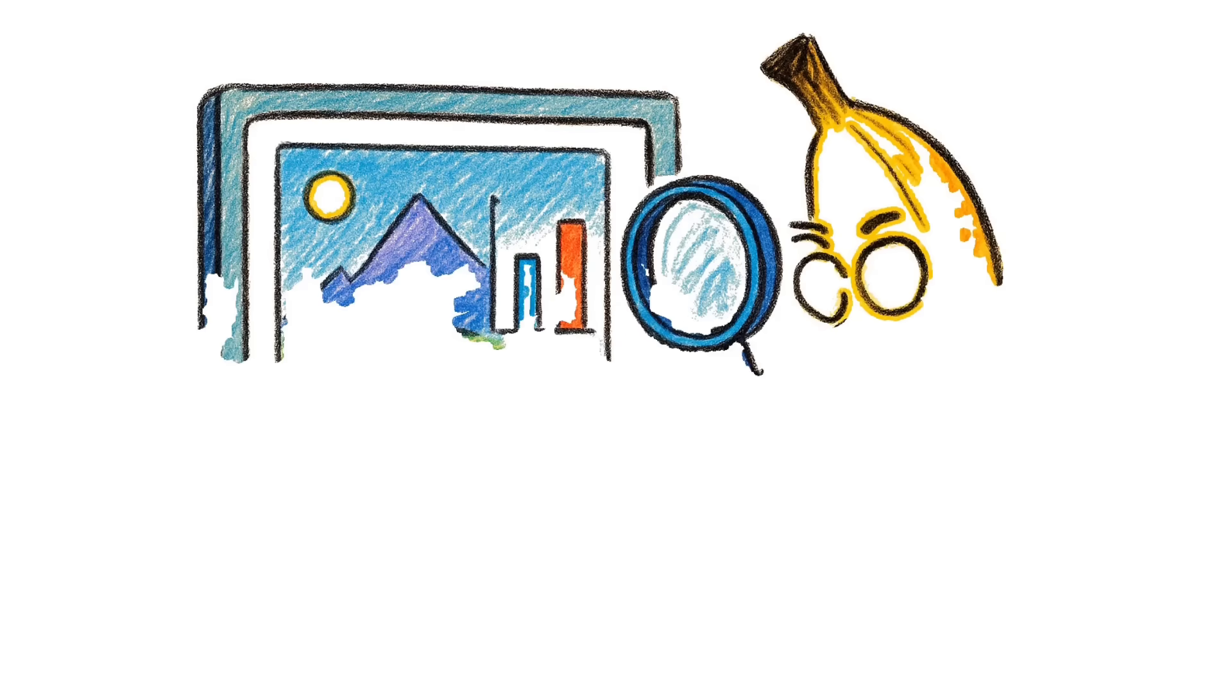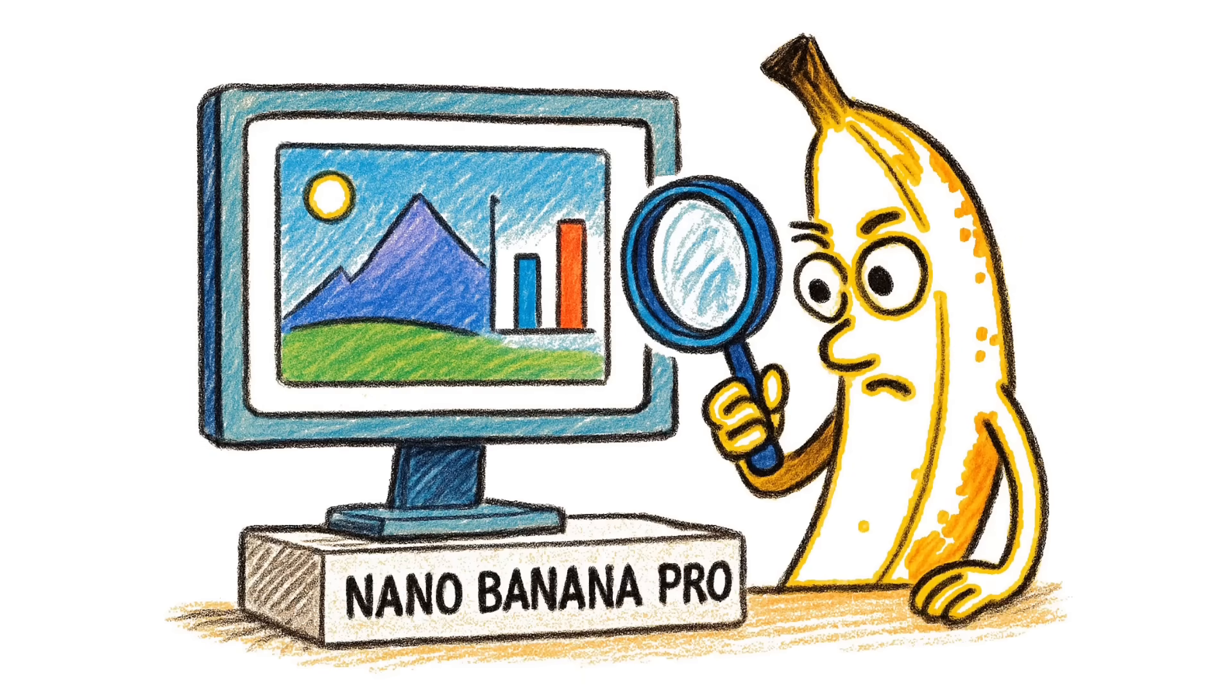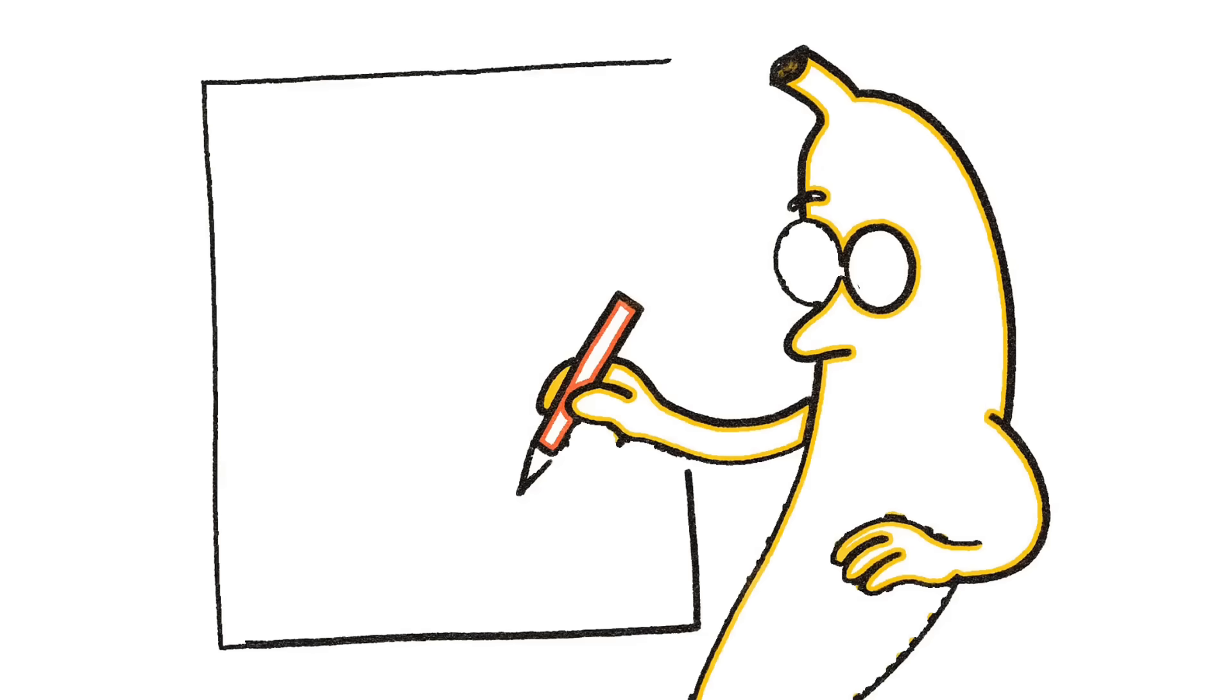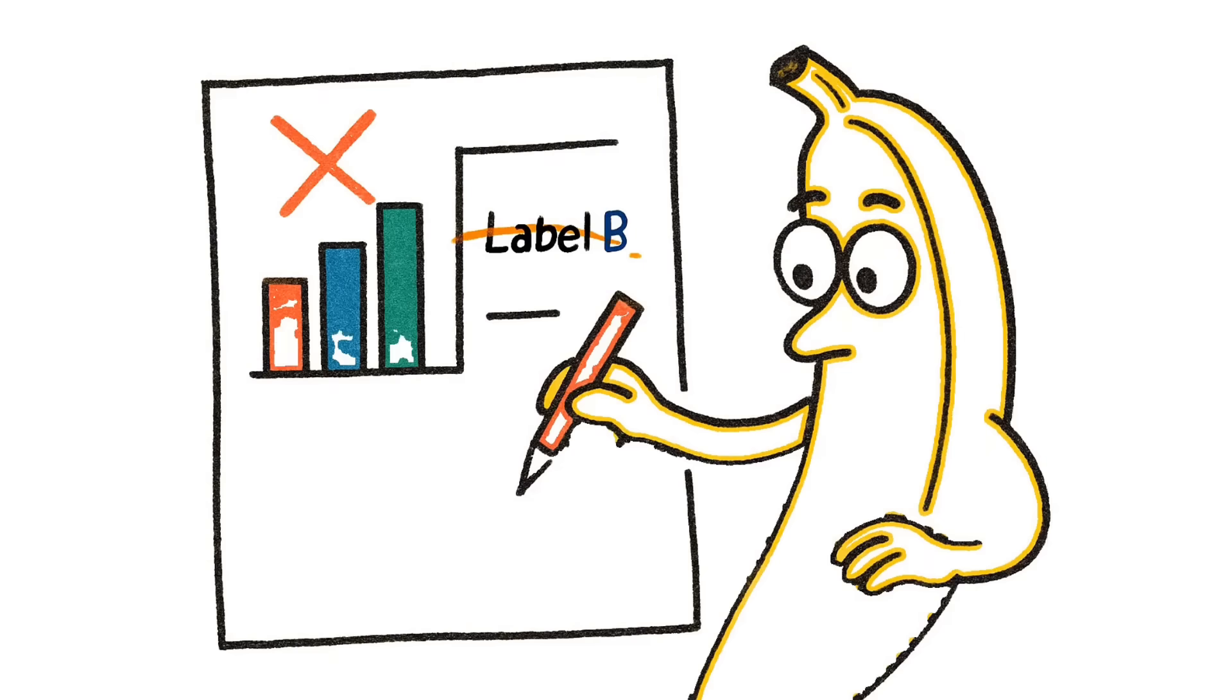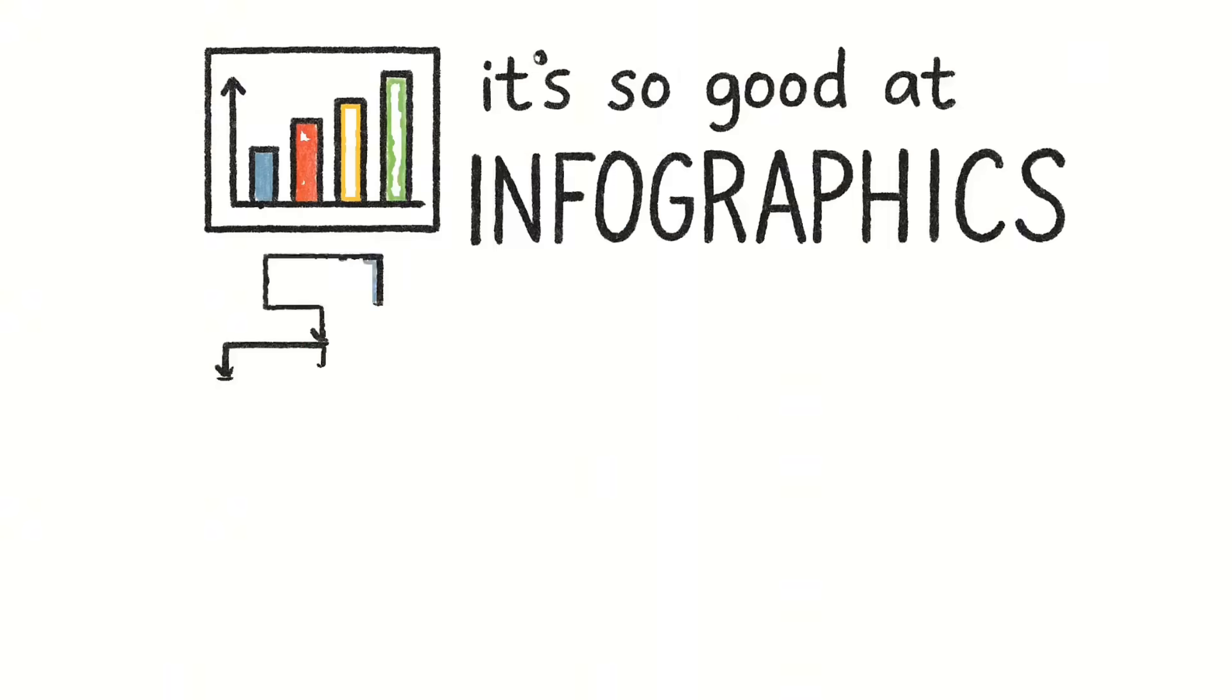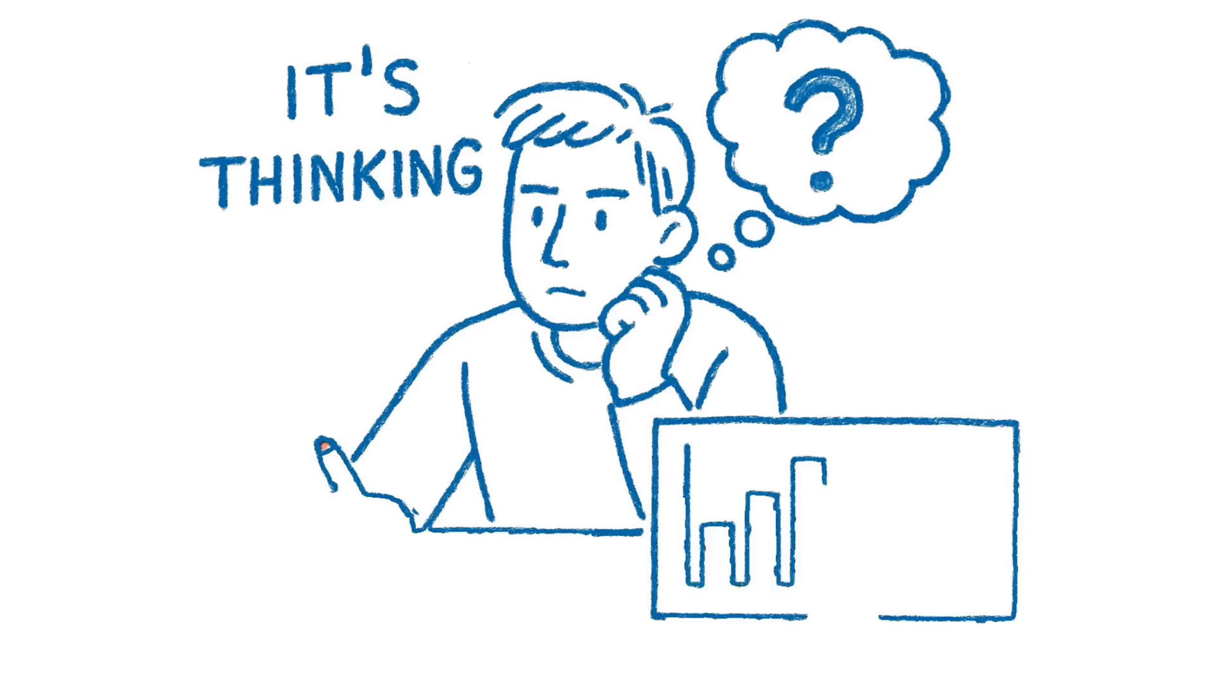Nano Banana Pro? It generates the image, then inspects it, like a designer doing a self-review. It checks the layout, the text, the relationships between objects. If something's off, like a mislabeled chart or wrong object count, it fixes it before showing you. That's why it's so good at infographics and diagrams. It's not just drawing. It's thinking about what it drew.